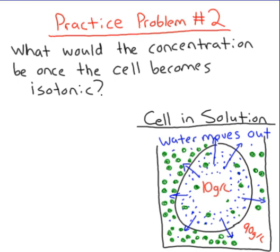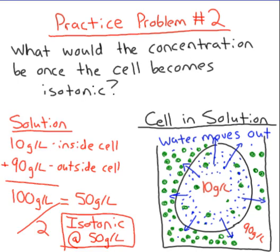If you're getting the hang of this, try the next one on your own. What would the concentration be once the cell becomes isotonic? Isotonic and equilibrium mean the same thing. Take the average and find what the equilibrium concentration would be. The solution is 50 grams per liter for isotonic — that's what it's going to be at equilibrium.